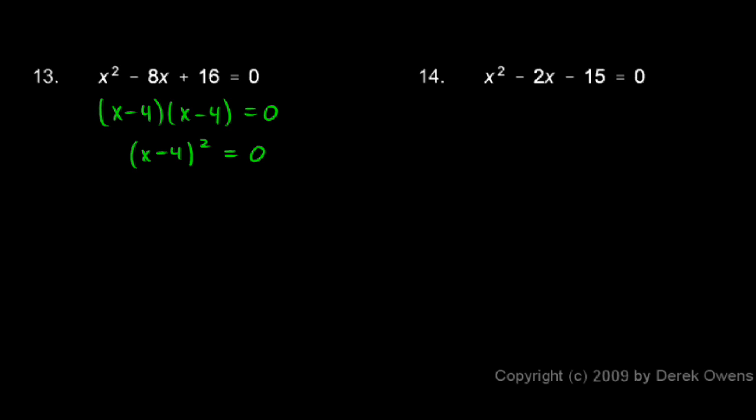And again, this is easy to solve just at a glance. What value for x will make this 0? You should be able to see very easily that if you put in a 4 right there for x, you'll have 4 minus 4, which would give you 0 squared, which is 0.